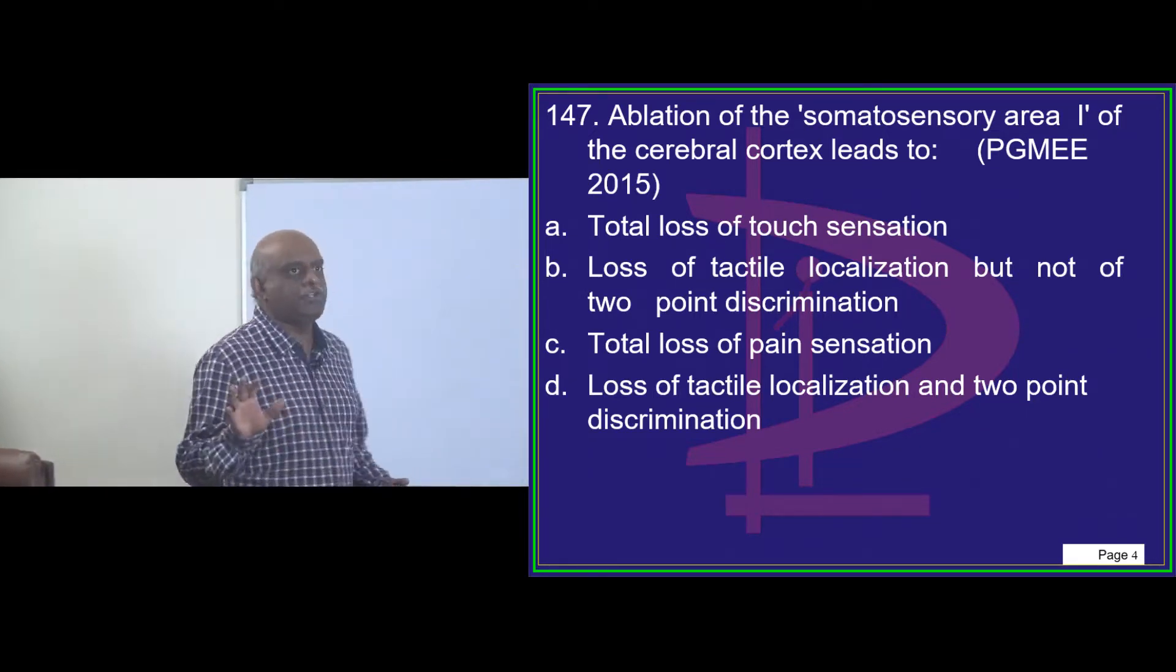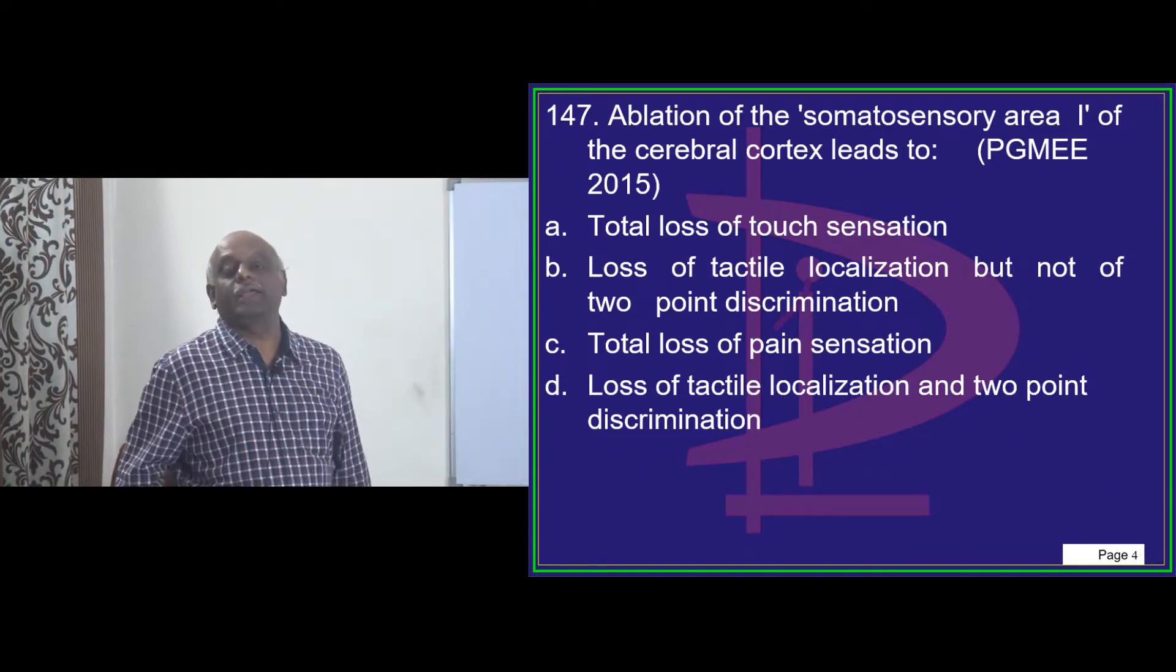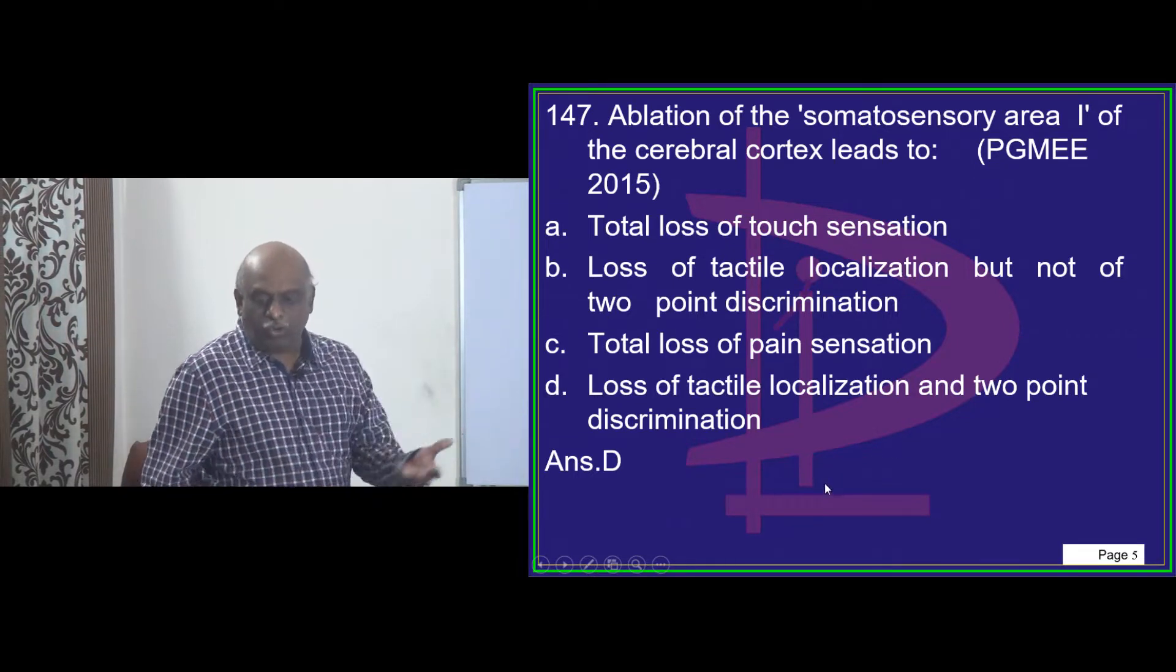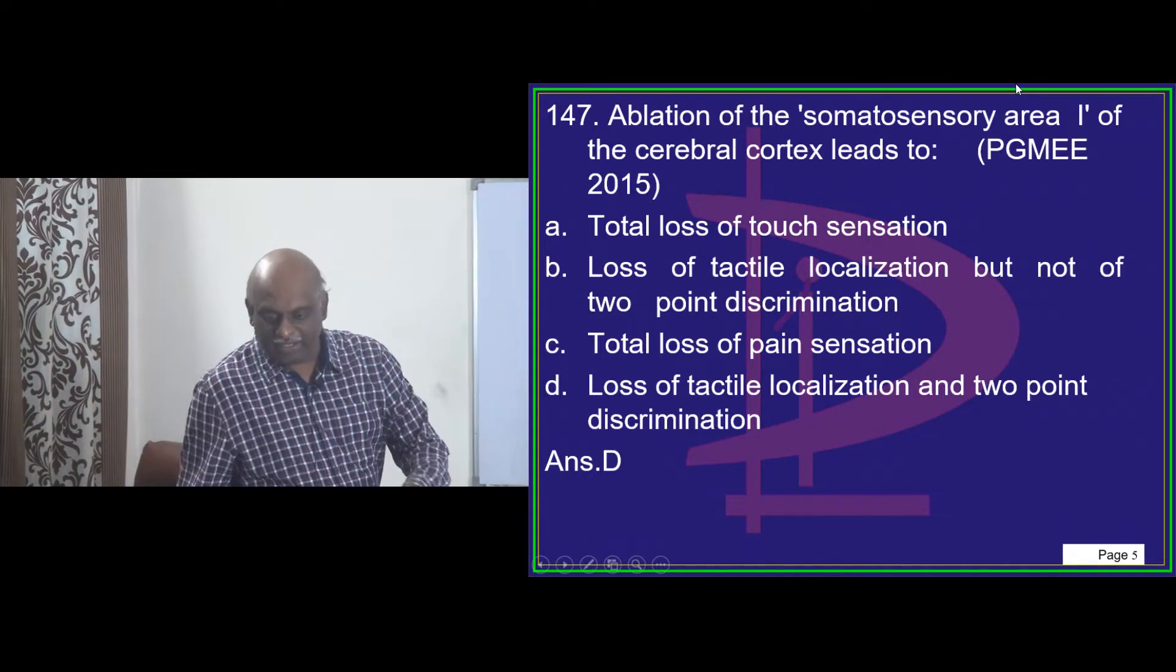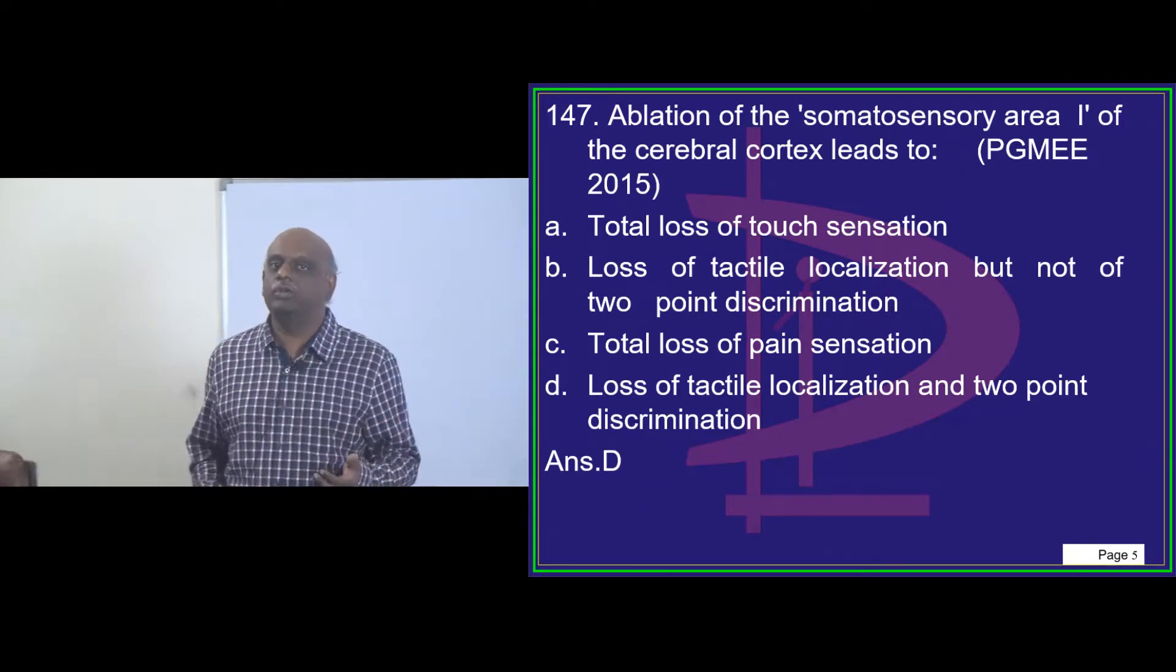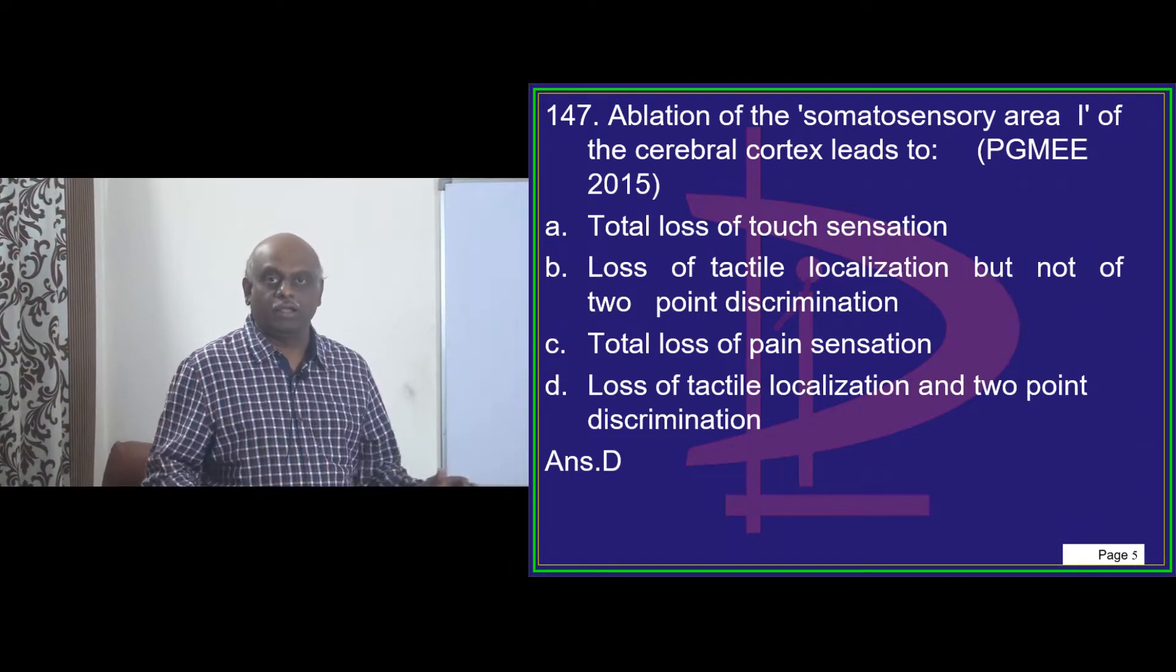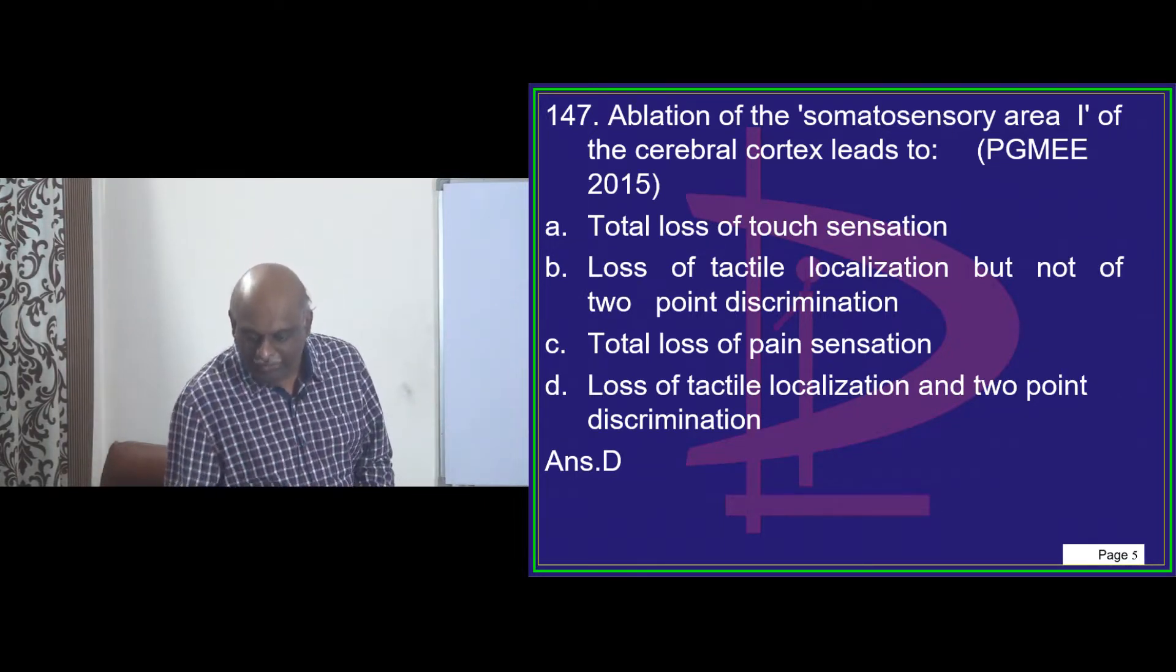Now, ablation of somatosensory area 1 of the cerebral cortex, what does it lead to? It leads to the loss of tactile sensation, localization, and two-point discrimination is what you have to basically remember. Shirak Goyal, please download the Umedico app discussion forum. It is already there, so just start expressing on the discussion forum in the Umedico app.